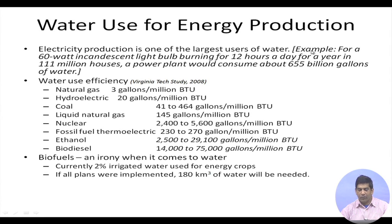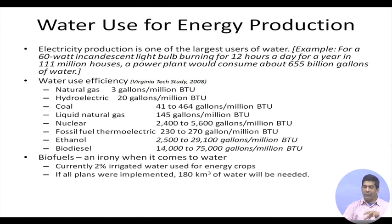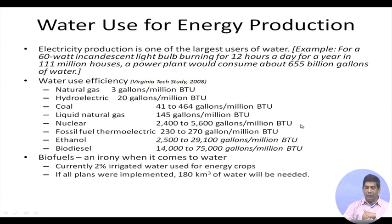Electricity production is one of the largest uses of water. For example, if you have a 60-watt incandescent light bulb burning for 12 hours a day for a year in 101 million houses, a power plant would consume about 655 billion gallons of water — multiply by 4, that is around 2,500 to 2,600 billion liters. In terms of efficiency: natural gas uses 3 gallons per million BTU, hydroelectric 20 gallons, coal 41 to 464 gallons depending on technology, LNG 145 gallons, and nuclear much more — 2,400 to 5,500 gallons per million BTU. So nuclear power actually has a much bigger water footprint compared to coal.